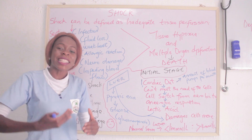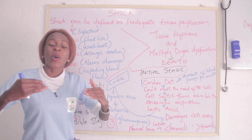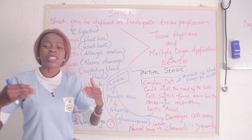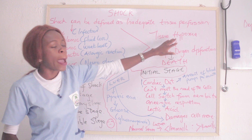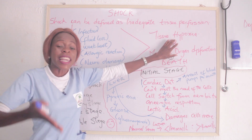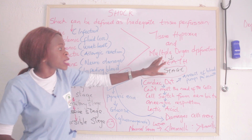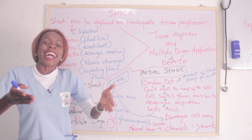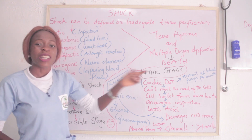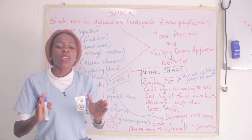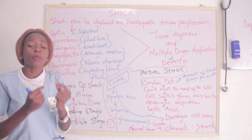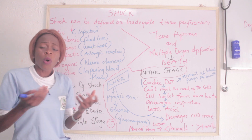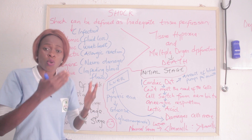The body tissues are not getting enough oxygen to carry out normal function. When tissues don't get enough oxygen, tissue hypoxia tends to result. And if not tackled, multiple organ dysfunction syndrome is going to take place, and if not attended to, death will be inevitable. So whenever you hear shock, what should come to your mind is inadequate tissue perfusion.